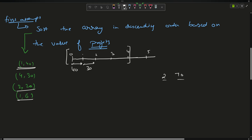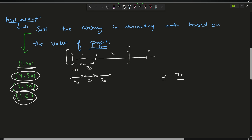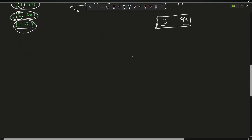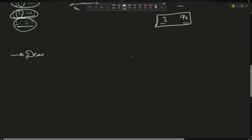But what if instead we place the job with deadline 2, profit 20 first in slot 2, then profit 30 in slot 4, giving profit = 40 + 20 + 30 = 90 with 3 jobs done? That is clearly better. So sorting by profit alone is not the perfect approach — it gives wrong results.